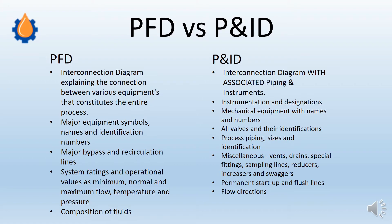Let's look at the key difference points between PFD and P&ID. A PFD is an interconnecting diagram explaining the connections between various equipments that constitute the entire process. The P&ID is similar but is a detailed version with additional information on associated piping and instruments. For PFDs, major equipment symbols, their names, and identification tag numbers are all available.